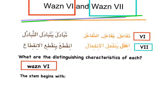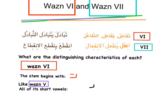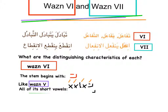Let's look at wazn 6 first. The stem begins with a ta. And like wazn 5, all of its short vowels in the madi (past tense) are fathat. So in madi, for example, you have tafa'ala — just put it on the pattern — and the short vowels are going to be tafa'ala. All the short vowels are fathat in the madi.